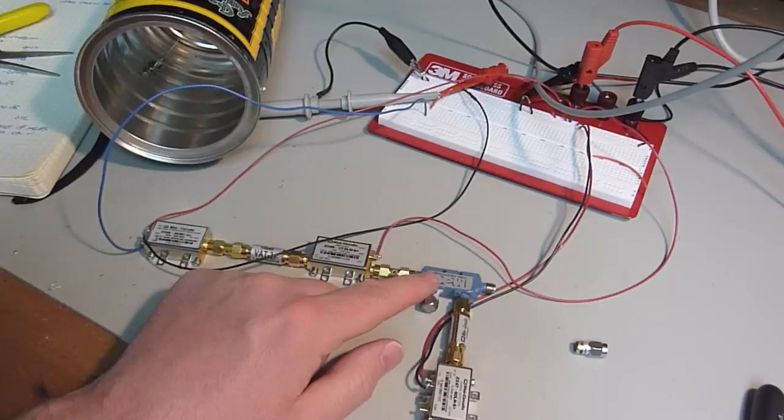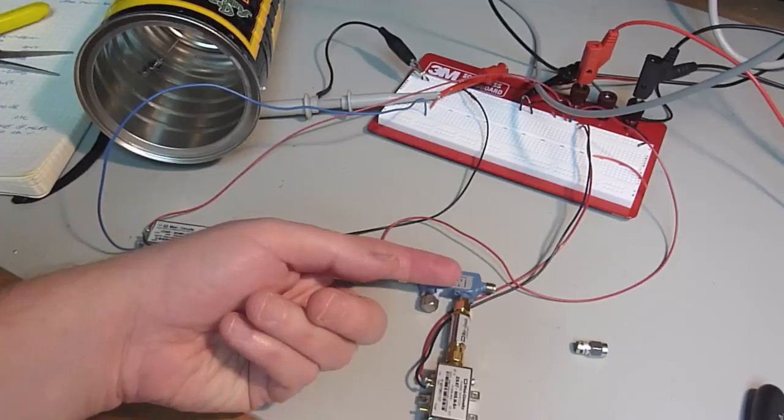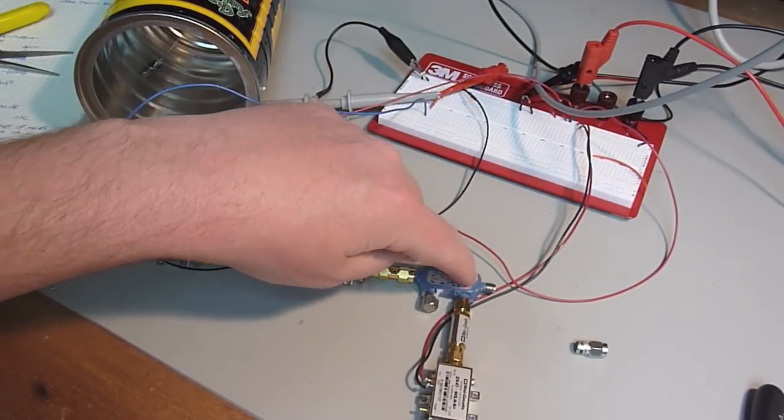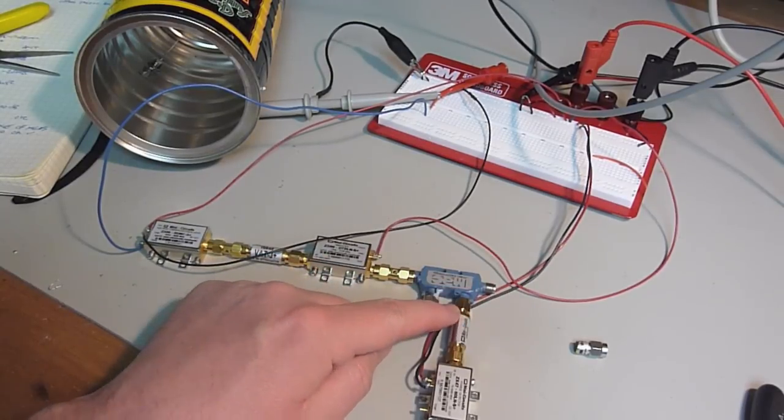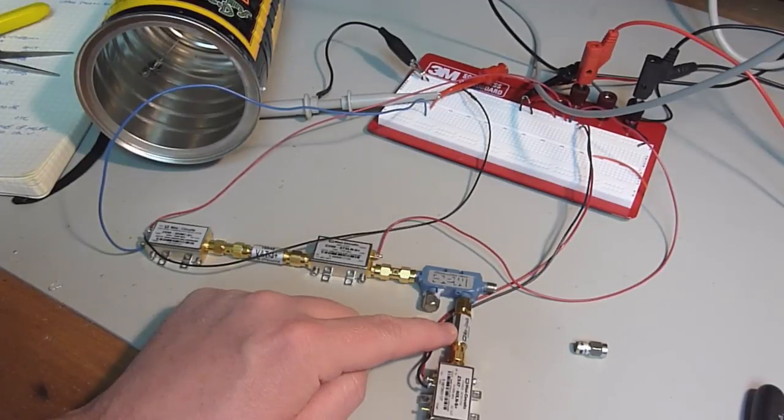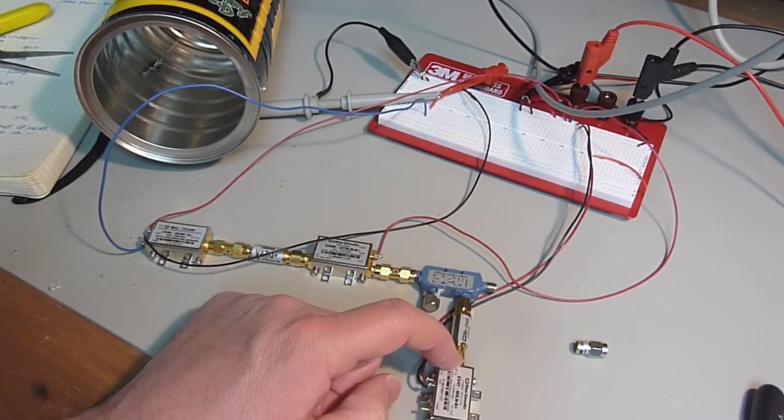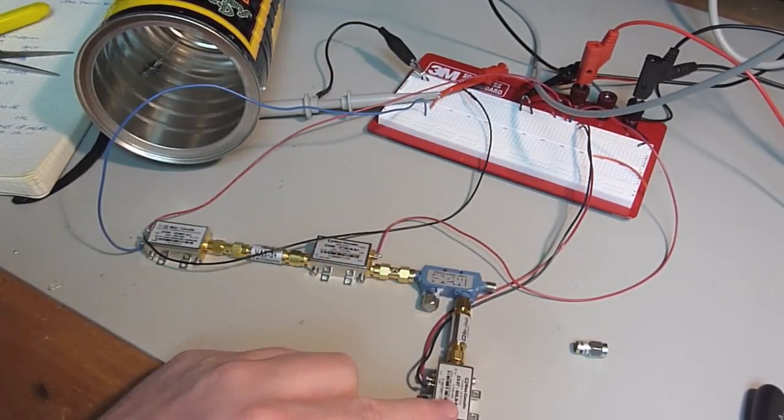So this part is not part of the standard coffee can radar kit. It's a 10 dB coupler and I got this off of eBay. So what happens is the power goes out of this port and any reflected power, 10 dB down, so minus 10 dB of that, is coupled into this port. And then I have an additional 20 dB of attenuation, so what I have here is 30 dB down from the reflected power coming back this way.